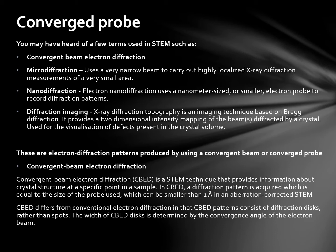Microdiffraction uses a very narrow beam to carry out highly localized X-ray diffraction measurements of a very small area. Electron nanodiffraction uses a nanometer-sized electron probe to record diffraction patterns. Diffraction imaging, or X-ray diffraction topography, is an imaging technique based on Bragg's diffraction. It provides a two-dimensional intensity mapping of the beams diffracted by a crystal and is used for the visualization of defects present in the crystal volume. Convergent beam electron diffraction, CBED, is a STEM technique that provides information about crystal structures at a specific point in a sample. In CBED, a diffraction pattern is acquired equal to the size of the probe used. CBED differs from conventional electron diffraction in that CBED patterns consist of diffraction disks rather than spots, and the width of a CBED disk is determined by the convergence angle of the electron beam.